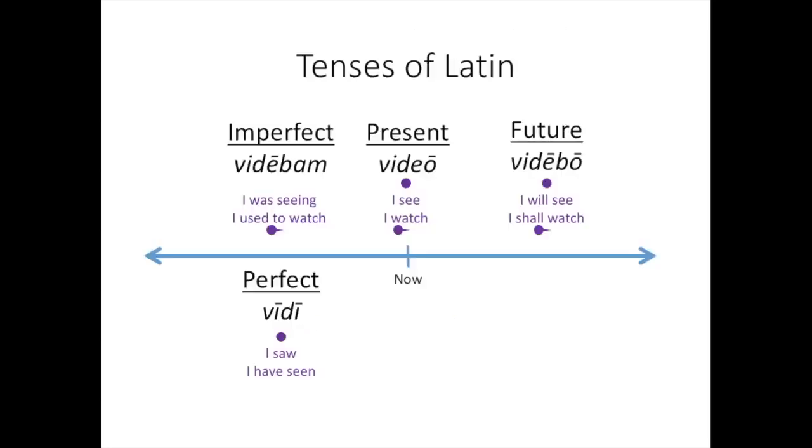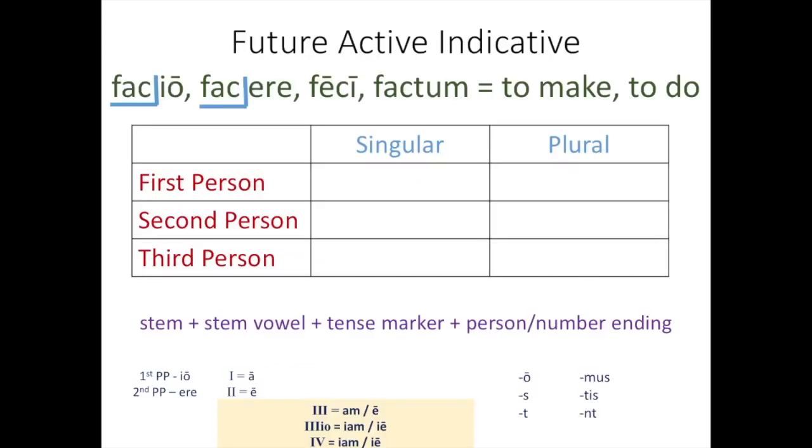Okay, time for the future. What will happen, whether it will happen one time or it will be an ongoing action. For these, our tense marker and our stem vowel combine, just like they did for third conjugation. And in fact, it will look very similar to your third conjugation regular verbs.